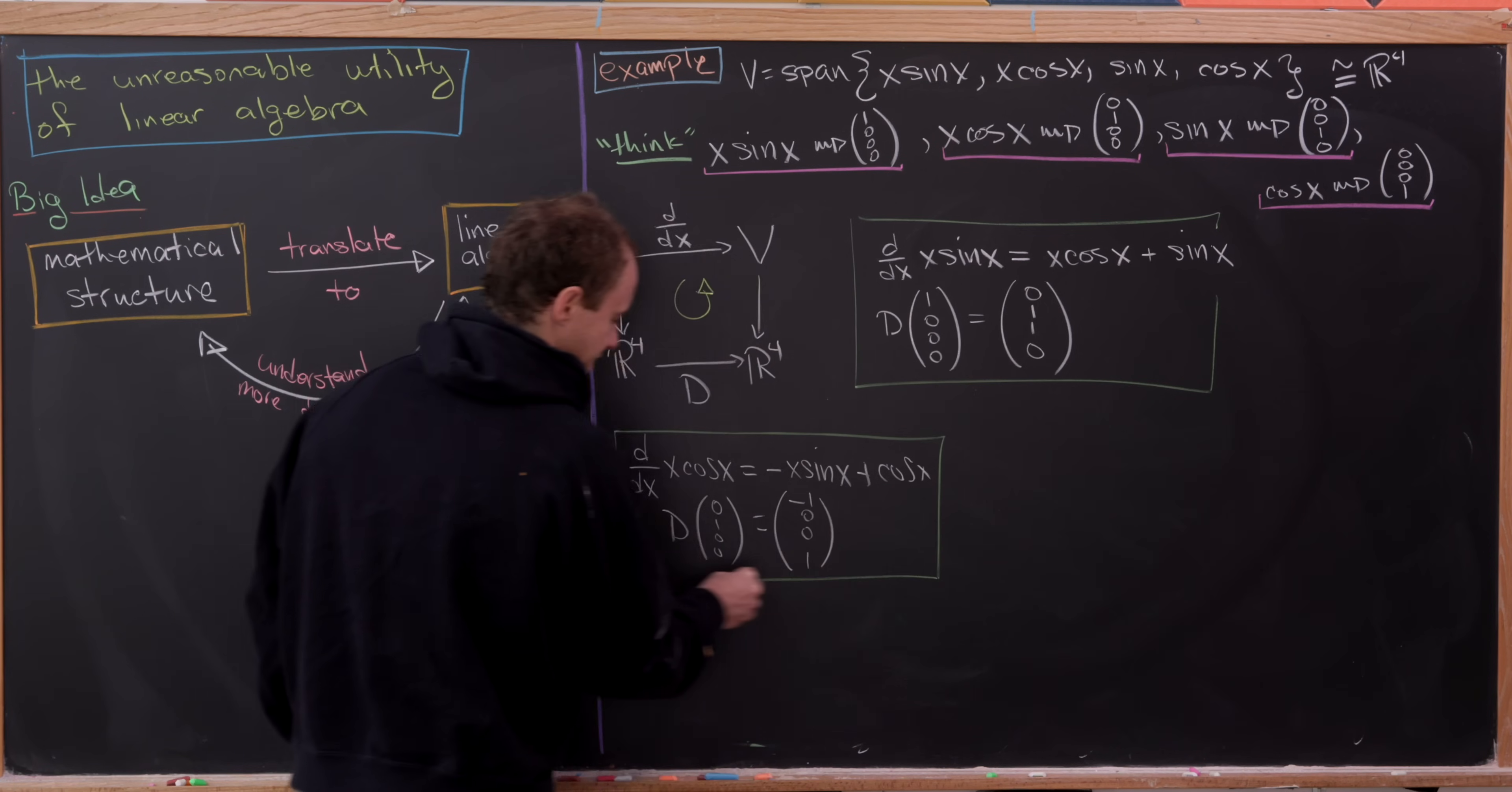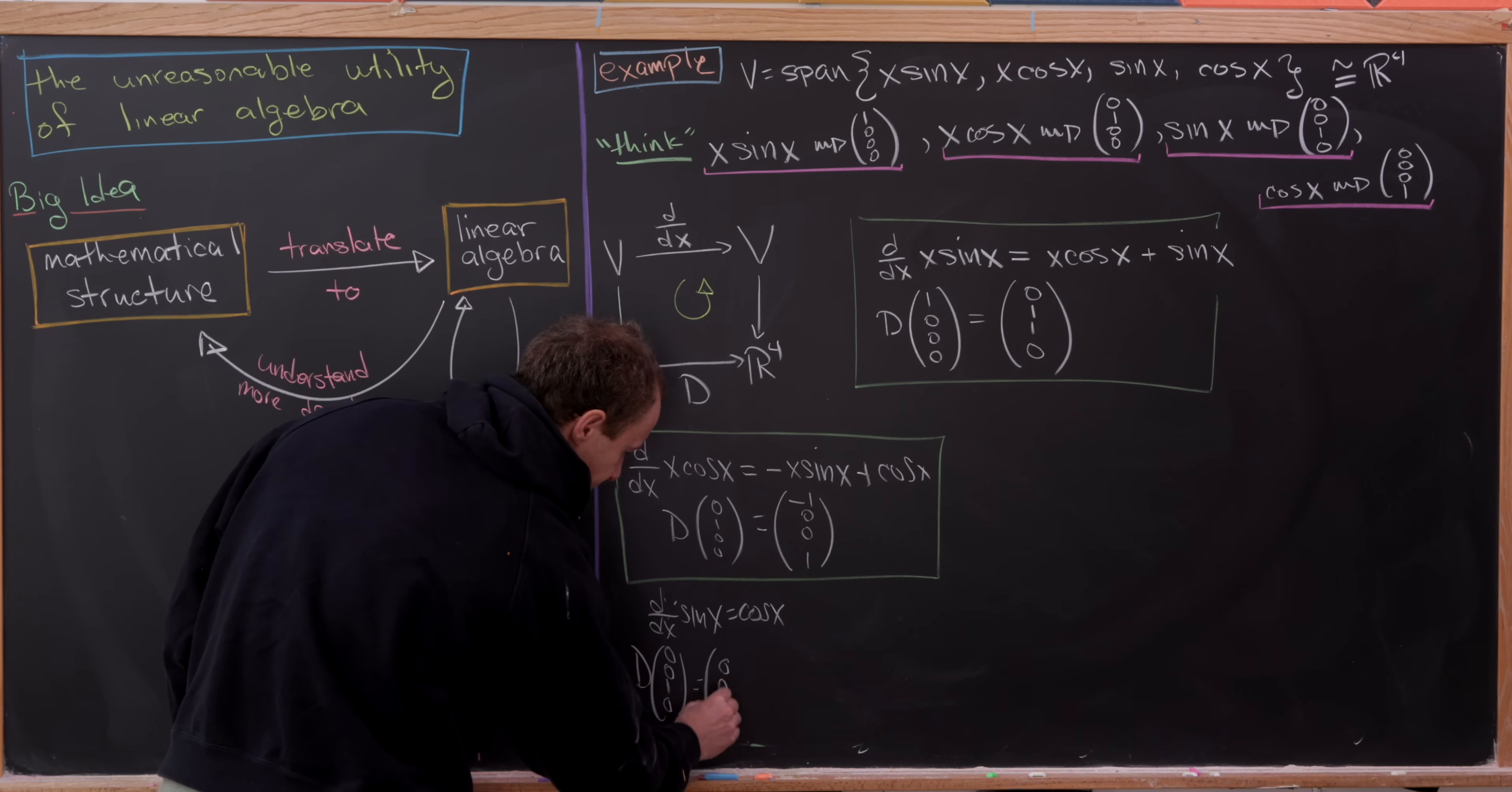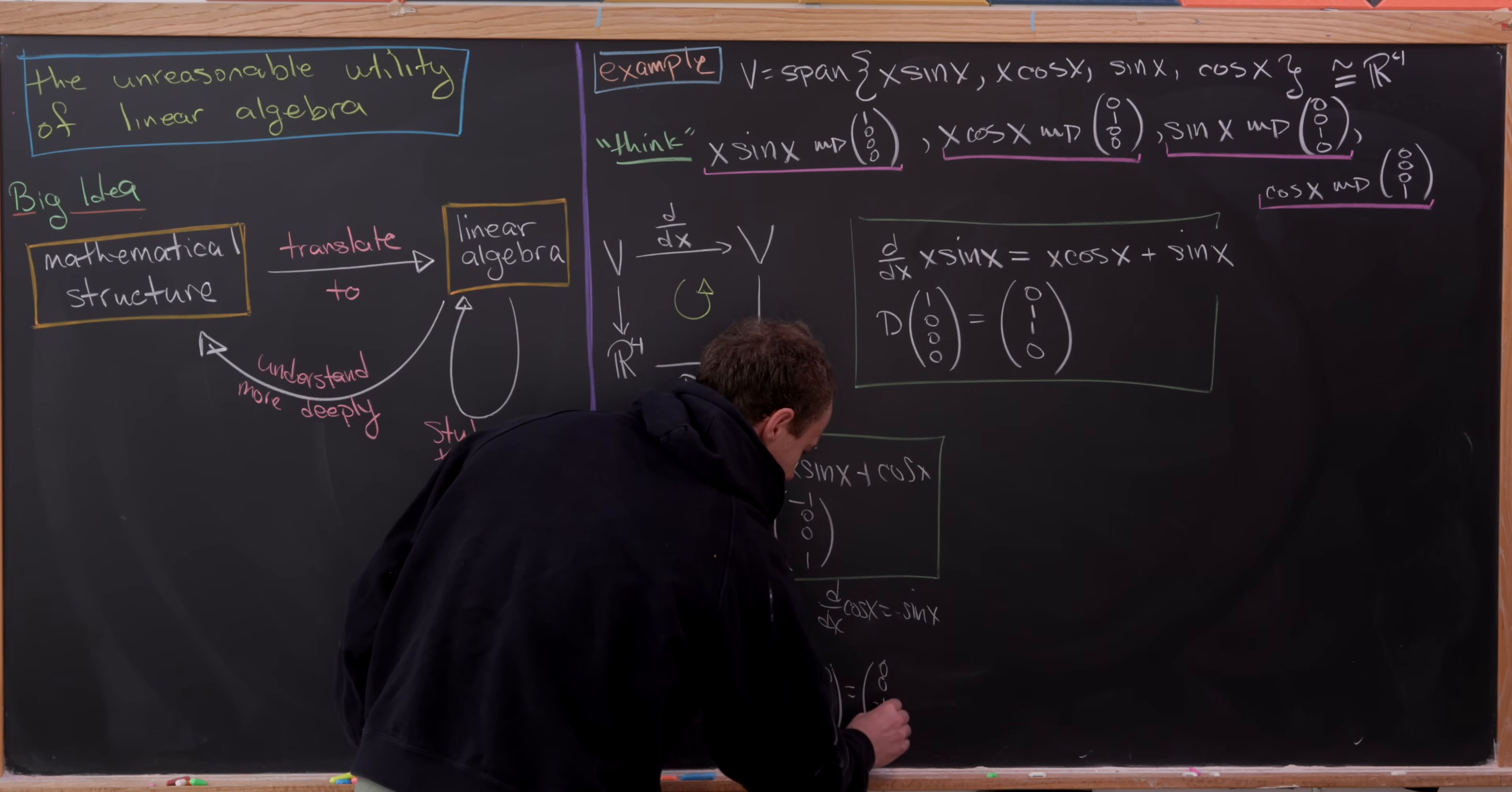Now let's see what happens to the remaining two vectors. So if we take the derivative with respect to x of sine of x, we simply get cosine of x. But that means D on the vector 0, 0, 1, 0 should give us 0, 0, 0, 1. And then finally, the derivative with respect to x of cosine x is negative sine of x. But that means D on 0, 0, 0, 1 should be 0, 0, negative 1, 0.